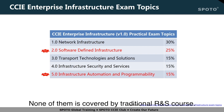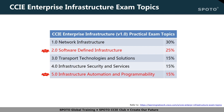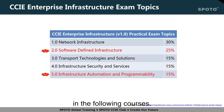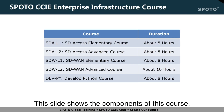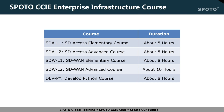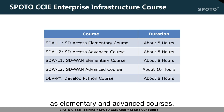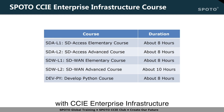None of them is covered by a traditional routing and switching course. Regarding SDN, it consists of SD-Access and SD-WAN, which will be explained in more detail in the following courses. This slide shows the components of this course. We have organized both SD-Access and SD-WAN as elementary and advanced courses. The learning contents fully comply with CCIE Enterprise Infrastructure official exam topics.